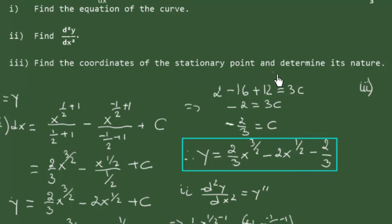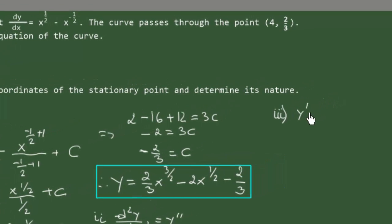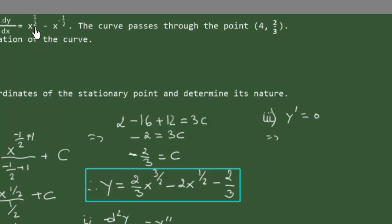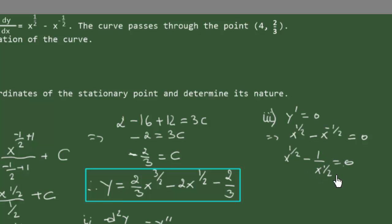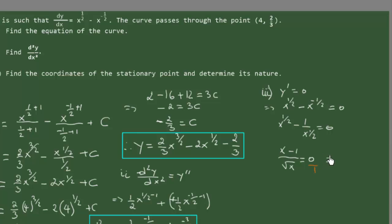To find the coordinates of the stationary point, we first solve the equation y prime equals zero. So x to the power of 1.5 minus x to the power of minus 1.5 equals zero. This can be rewritten as x to the power of 1.5 minus 1 over x to the power of 1.5 equals zero. Cross-multiplying gives x to the power of 3 minus 1 equals zero, so x to the power of 3 equals 1, therefore x equals 1.